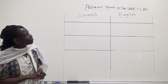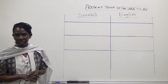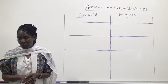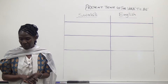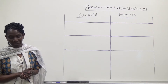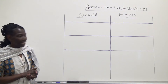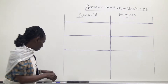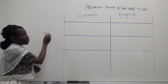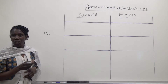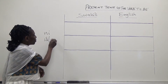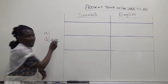We are going to look at the verb to be. In Swahili, the verb to be in its present tense form is very simple. It is expressed as 'ni', which in English means 'is' or 'are'.